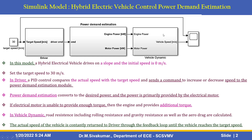The power demand estimation, engine power, and motor power M2 blocks apply to the vehicle dynamics blocks. In the vehicle dynamics subsystem, road resistance including rolling resistance and gravity resistance, as well as the aero drag, are calculated. Finally, the actual speed of the vehicle is constantly returned to the driver through the feedback loop until the vehicle reaches the target speed.